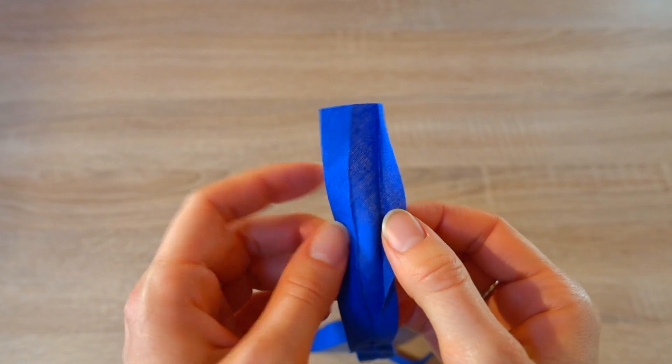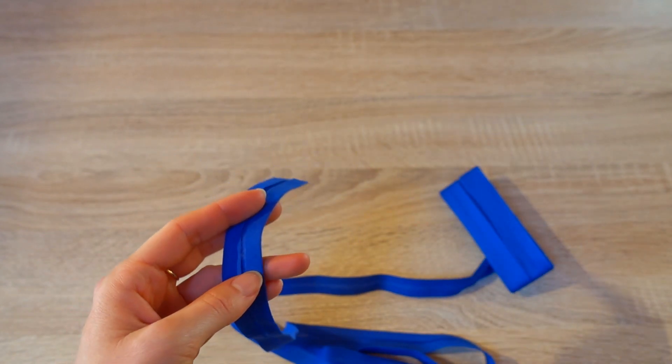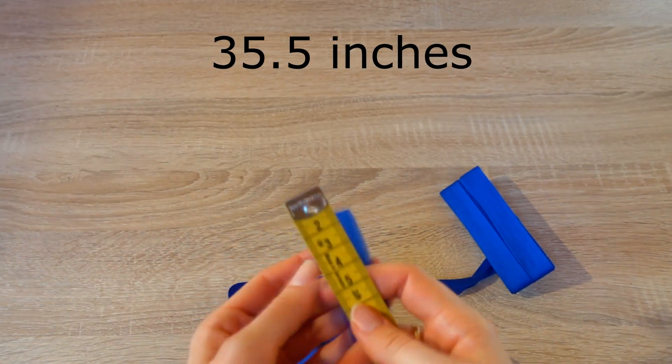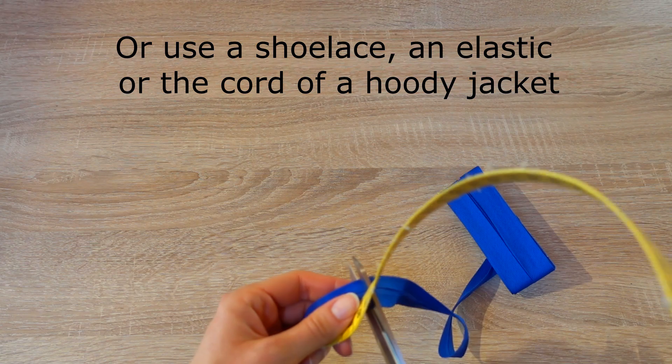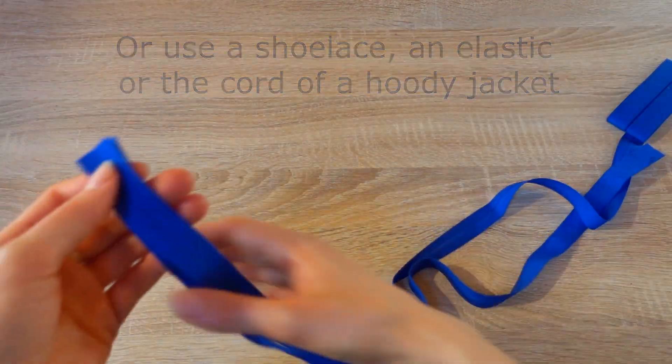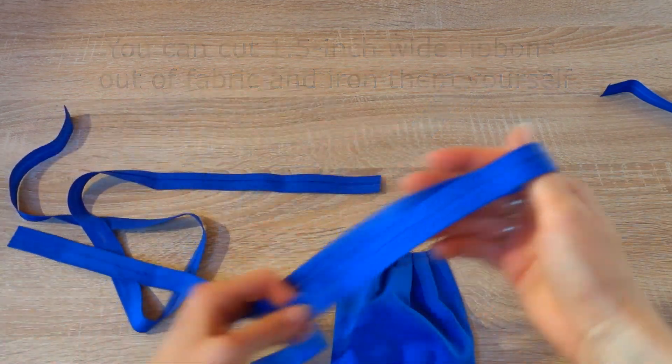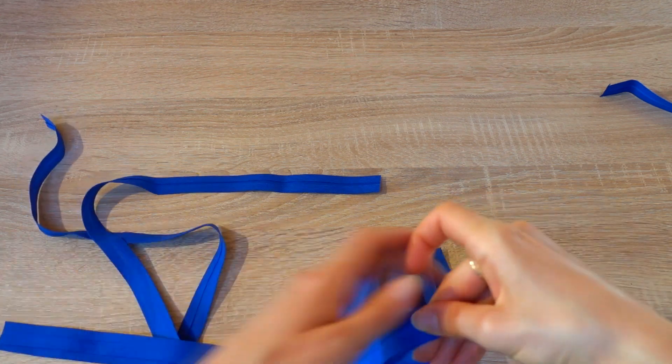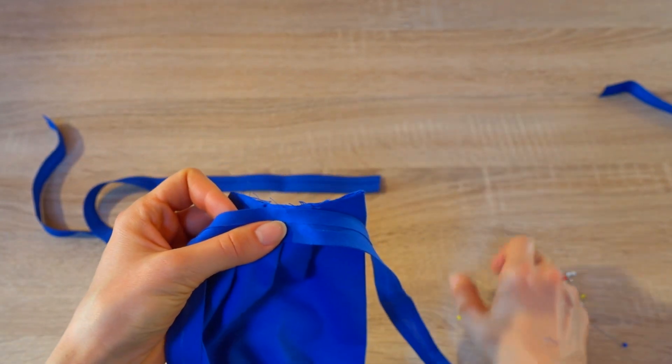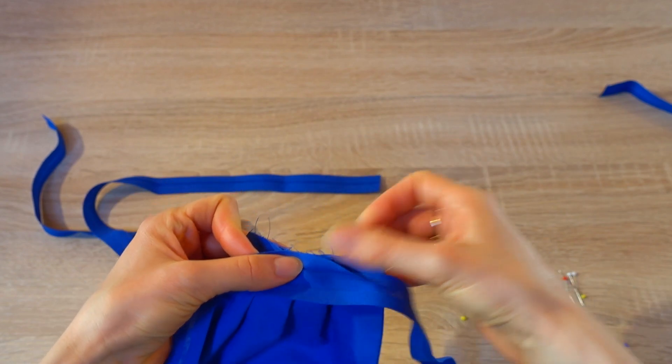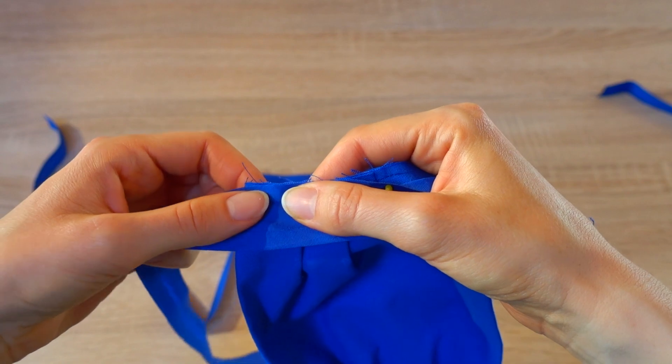For the ribbon that you need to tie the mask to your head, I am using bias tape. They are very convenient because they are already cut and ironed into place. Cut off two 35 and a half inch pieces. Fold the tape in half and mark the middle with a pin. Take the mask and put the middle of the tape approximately onto the middle of the outer edge. Fold open one edge of the bias tape and align it with the edge of the mask. Pin it in place.